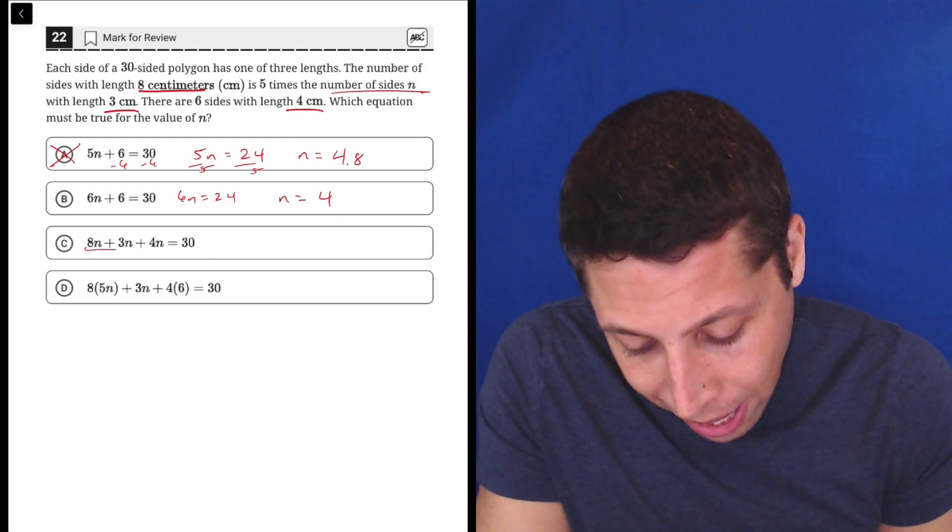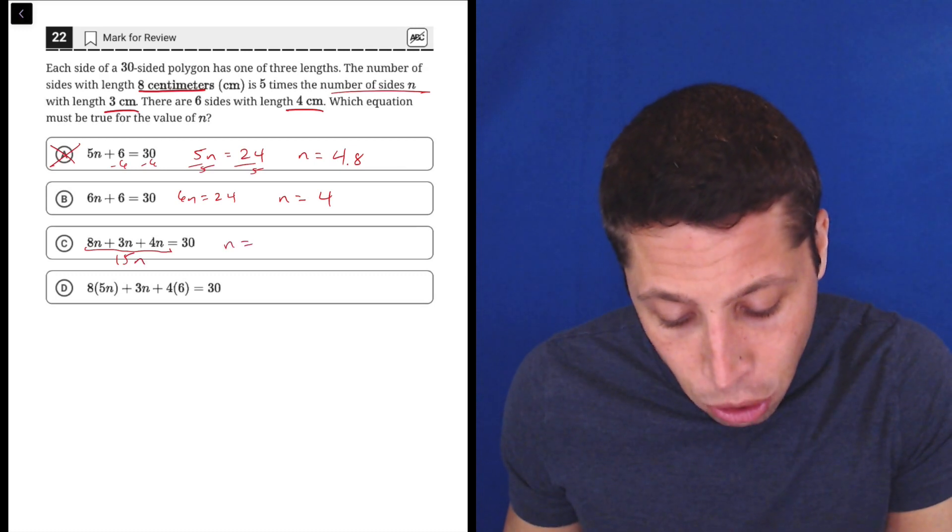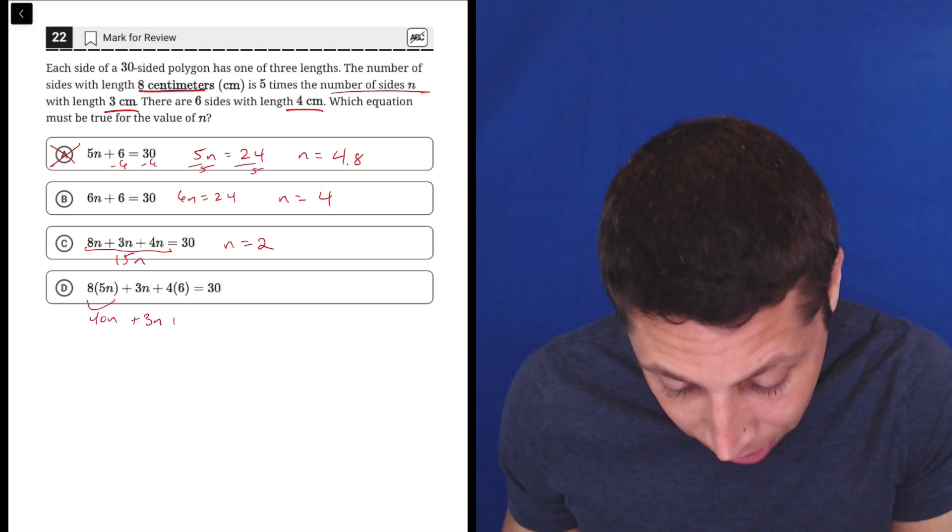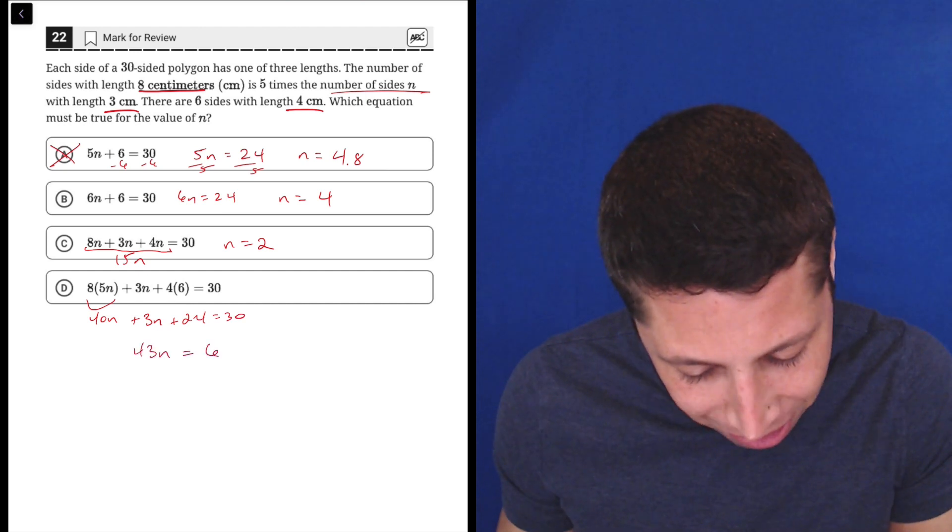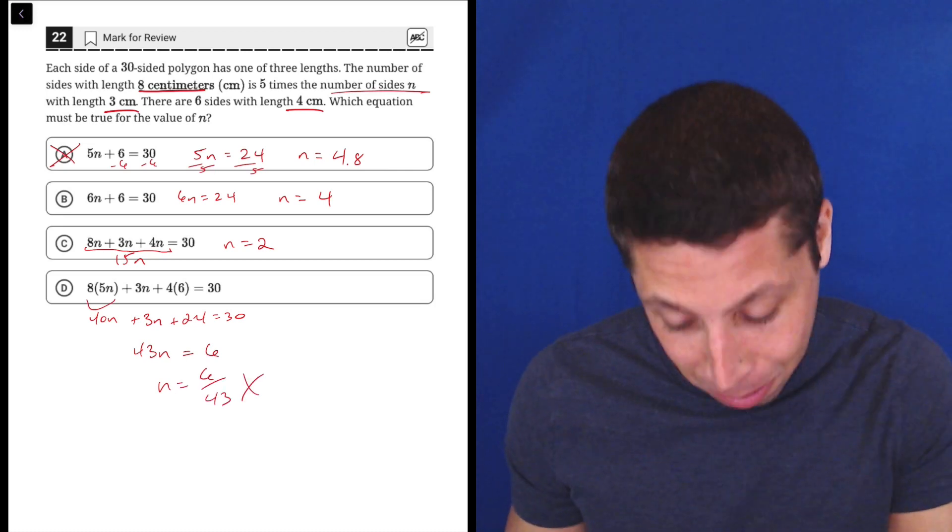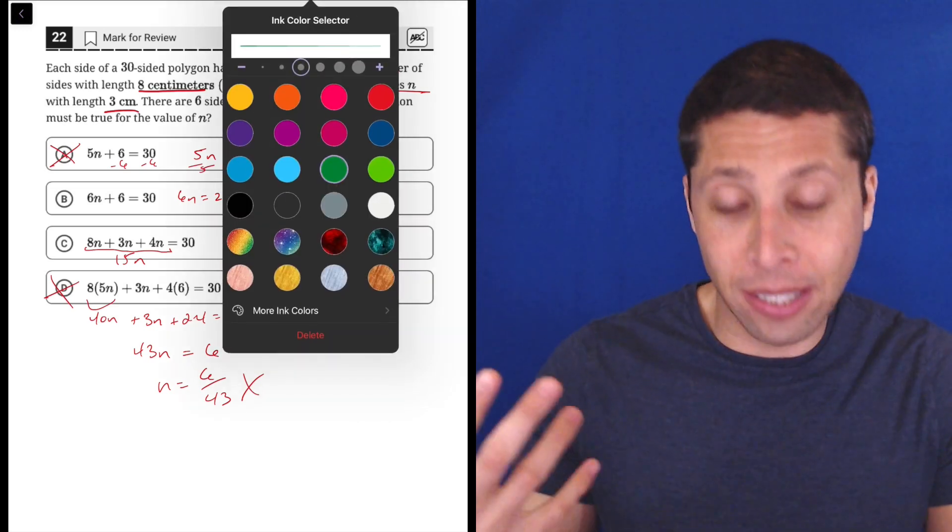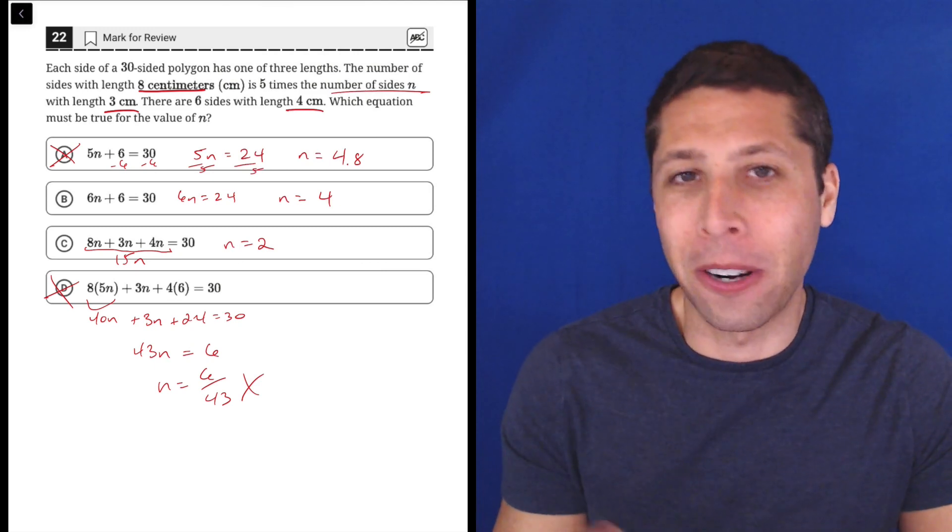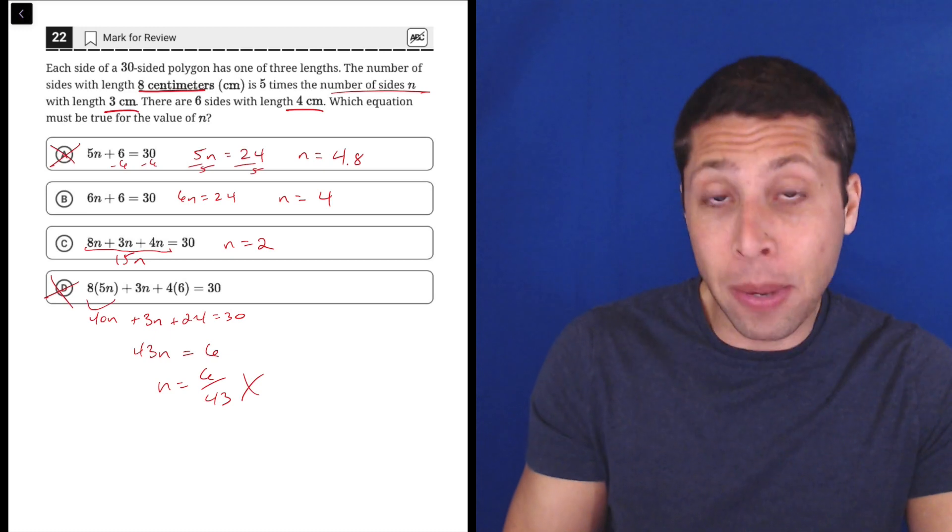So 8n plus 3n plus 4n, that's 15n. So if we divide, we would get n is 2 here. So that's also a reasonable number. If we did that here, we'd have 40n plus 3n plus 24. So that's, oh my God, 43n is equal to 6. So n is equal to 6 over 43. That's also a decimal I'm not even going to bother putting in the calculator. So right now we only have two choices that even make any sort of sense. And if you're thinking about what I said before about how the dimensions themselves probably aren't going to be part of this equation because we're not thinking about perimeter. We're not interested in the distance around this thing. It probably means that b is the answer.